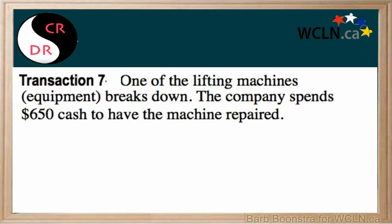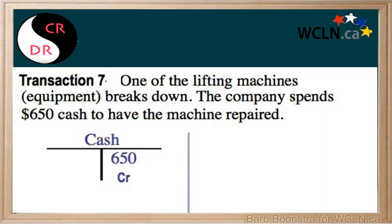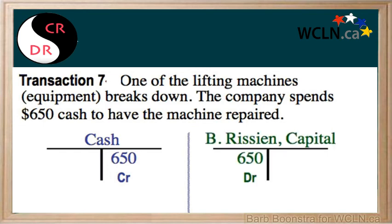Analyze this transaction in terms of cash. Cash goes down $650 because we've spent it, so therefore cash, an asset, decreases on the credit side. There will be a credit entry of $650. Because we've had to spend cash, the value of the business decreases by $650. The capital account decreases on the debit side, so we'll have a debit entry of $650.